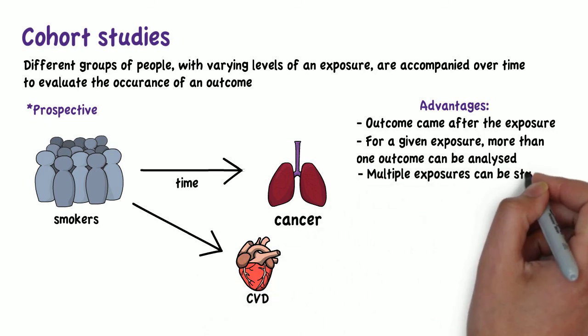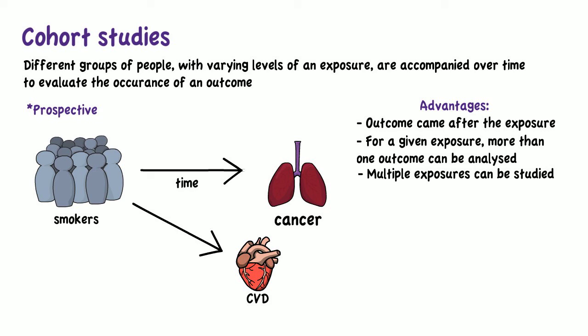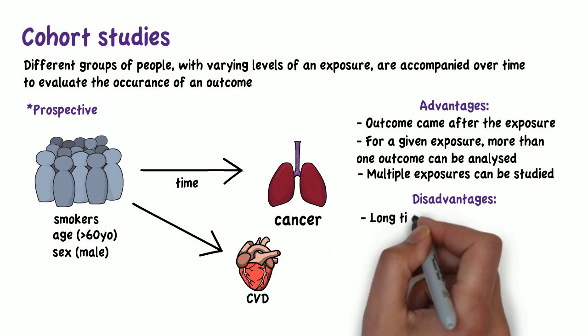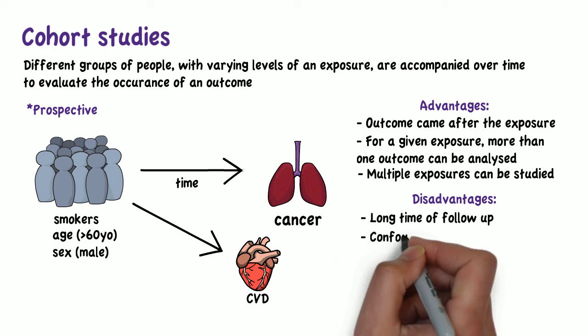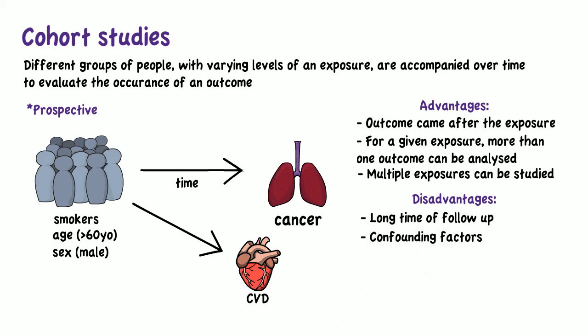Moreover, multiple exposures can be studied, such as age, sex, and smoking status. The disadvantages of cohort studies are that they require a long time of follow-up, which can take several years or even decades. There could also be unknown confounding factors that are not considered — for example, people who smoke may also drink heavily or use illicit drugs, which can affect the outcome.